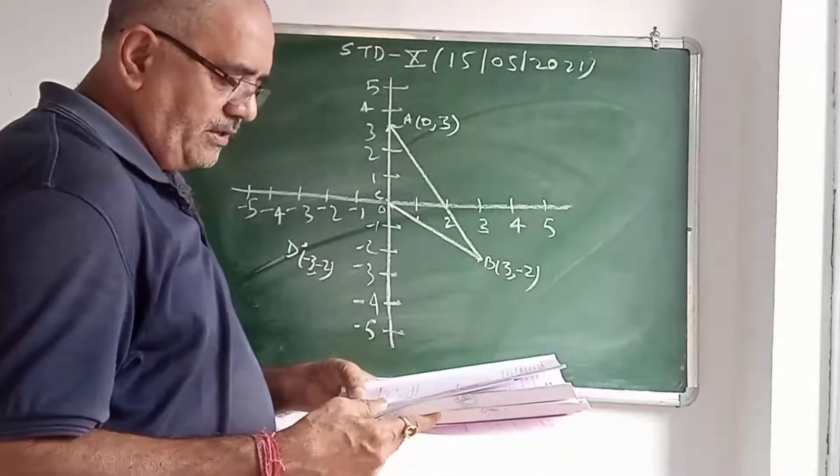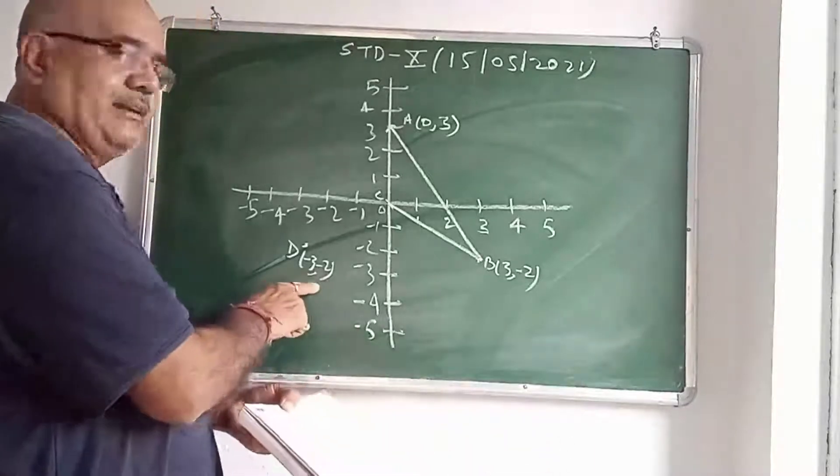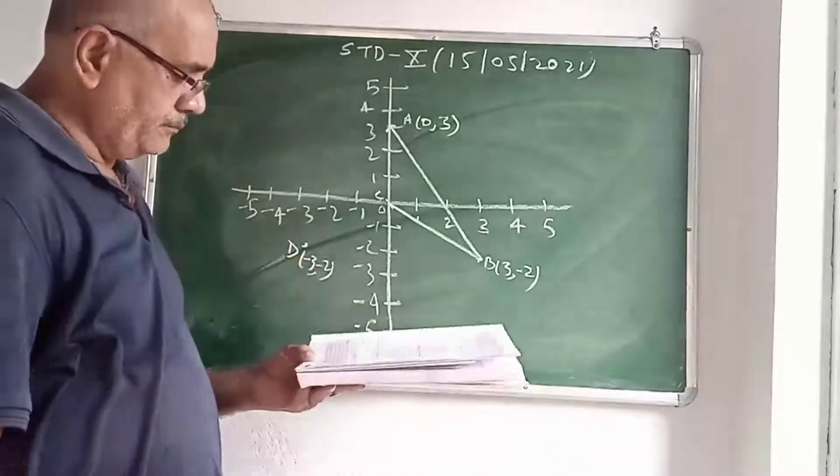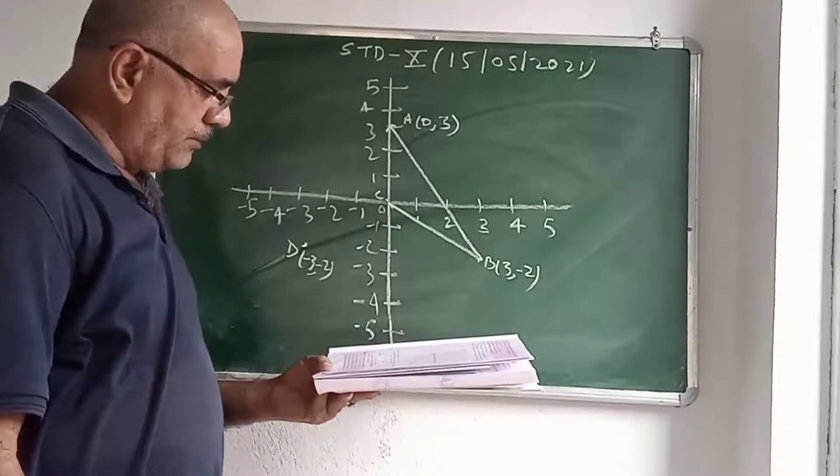This point. Plot D, the reflection of B in this y-axis. Write this coordinate. Coordinates is minus 3 minus 2.